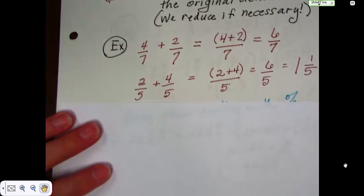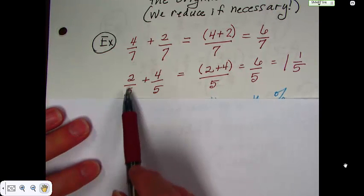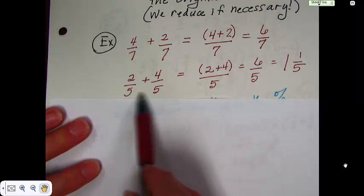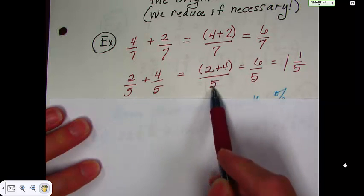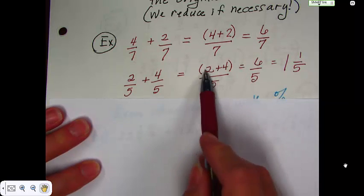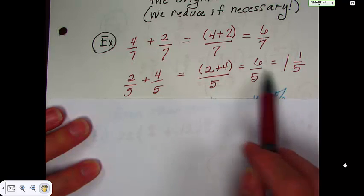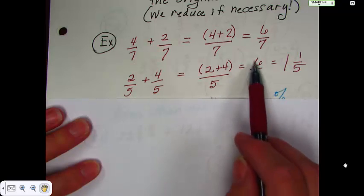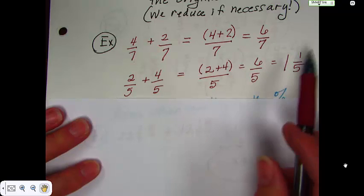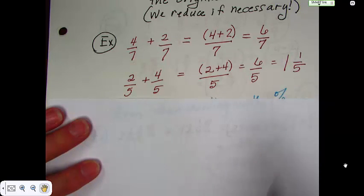Here's another example. 2 fifths plus 4 fifths. Denominators are the same. So, the denominator stays as 5. 2 plus 4 is 6. 6 over 5 is an improper fraction. So, we do have to reduce it by taking 5 into 6. It goes one time with one left over and, of course, you put that over 5.